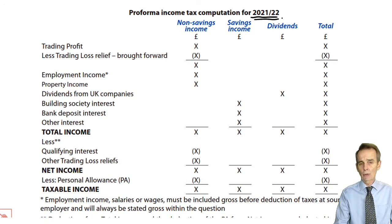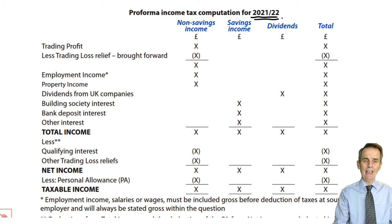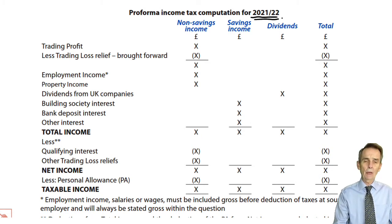For our particular exams, running from June 2022 through to March 2023, we'll be looking at the 2021-22 tax year. The computation will principally list out the income to be assessed in relation to that tax year. For most sources of income, that's an easy exercise to perform, because we'll be looking at an actual received basis of assessment.